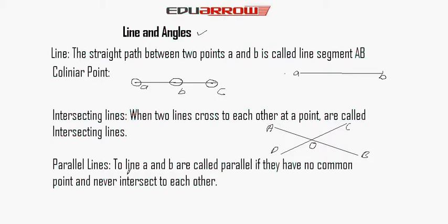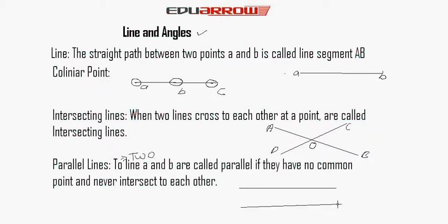Now we read about parallel lines. Two lines A and B are called parallel lines if they have no common point and never intersect each other. Here is one line A and another line B — these are two parallel lines because they have no common point and never intersect each other.